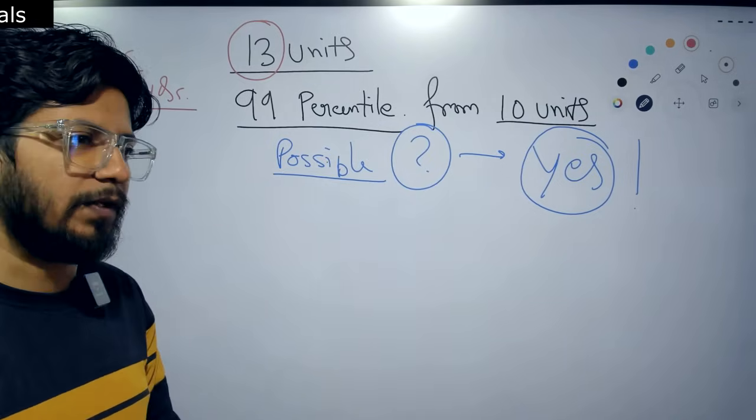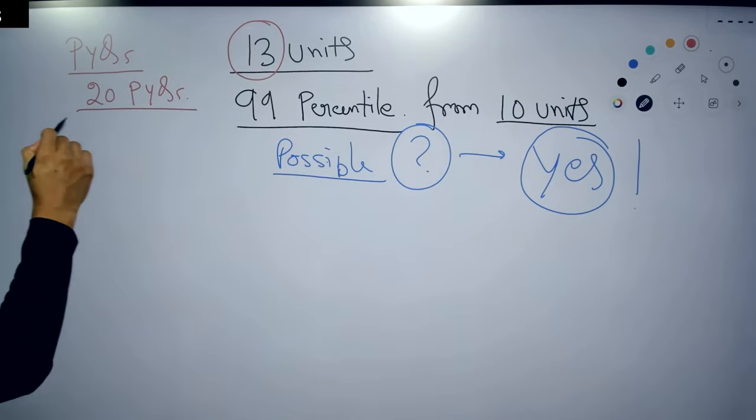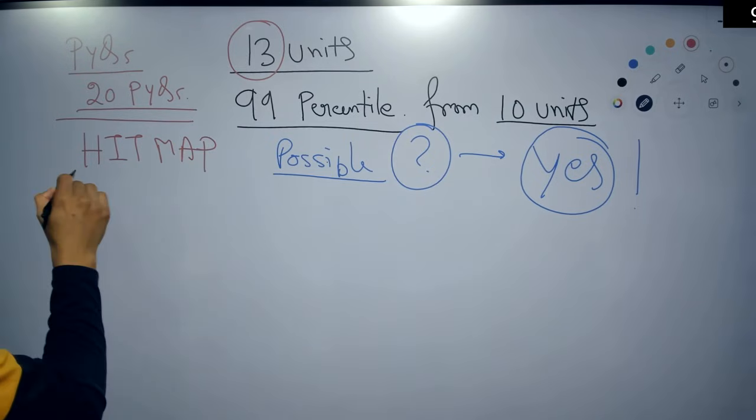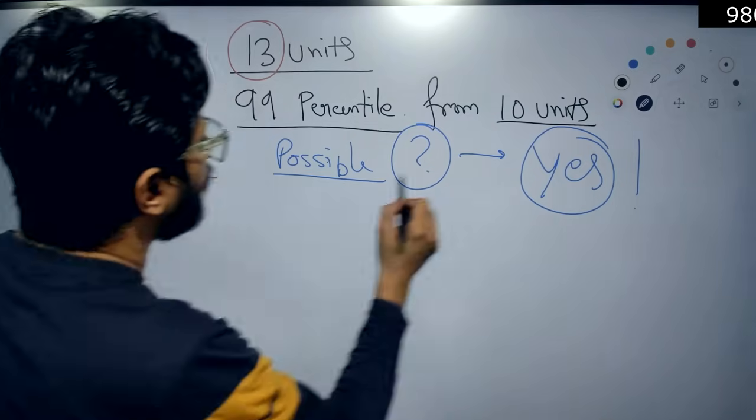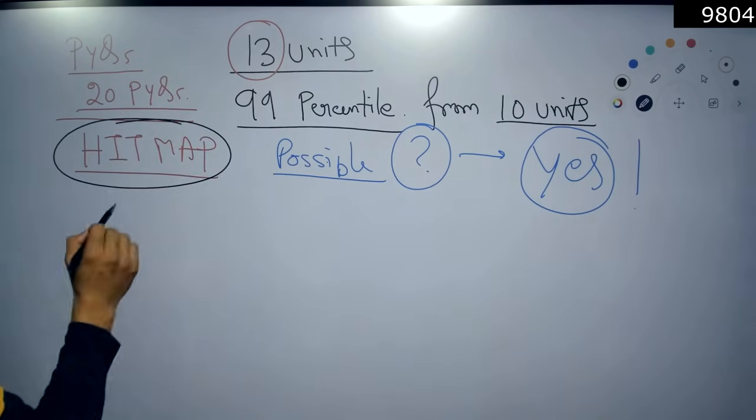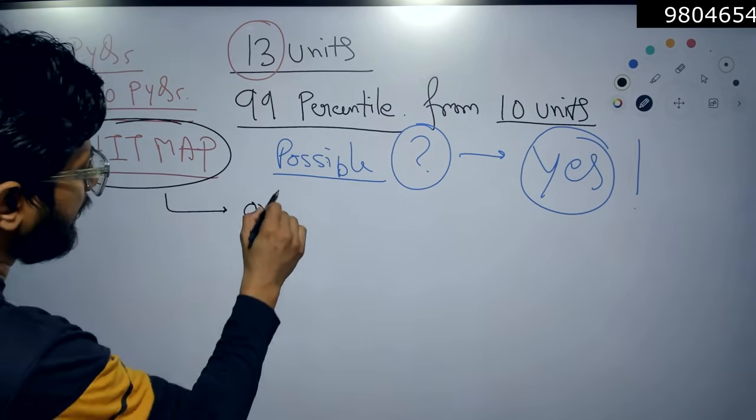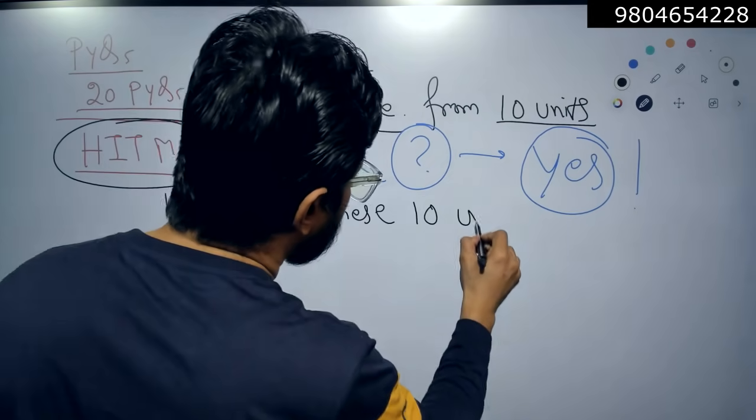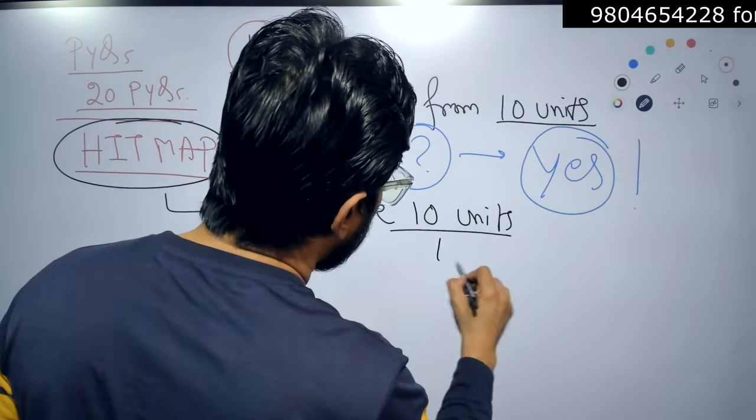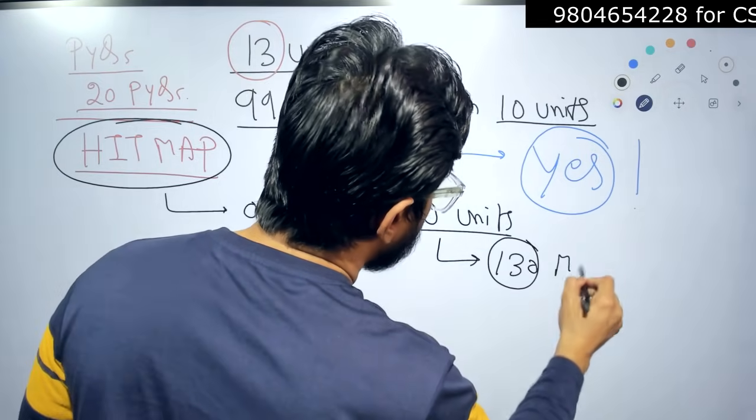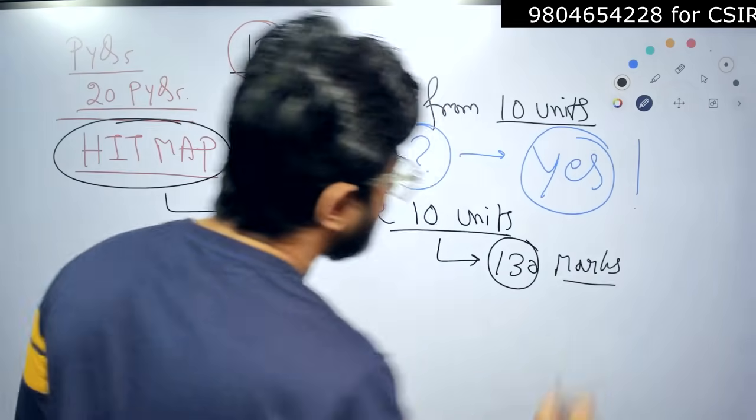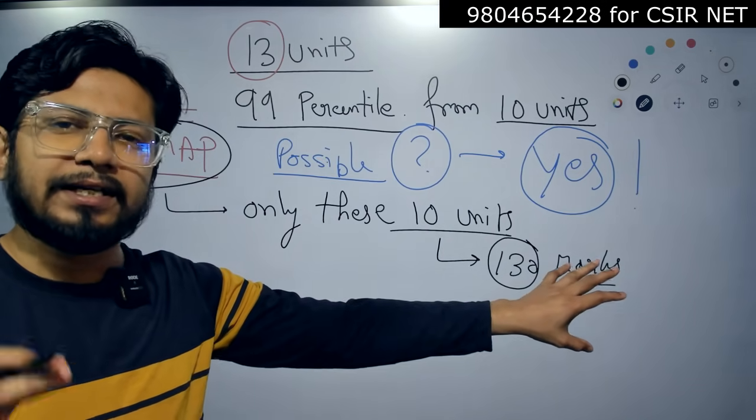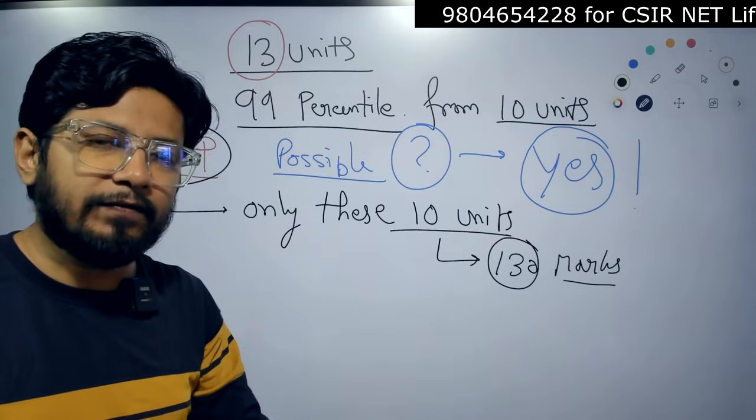From that analysis we did a heat map. This heat map analysis report that we provide shows us that by studying only these 10 units, one can score 130 marks easily. Scoring 130 marks out of 200 means not only getting JRF but getting a good rank, under 50 in CSIR NET Life Science examination.